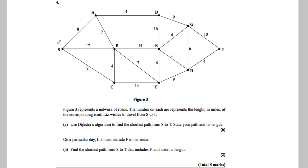Question 4. We've got a network and it says that Figure 3 represents a network of roads. The number on each arc represents the length in miles of the corresponding road. Liz wishes to travel from S to T.